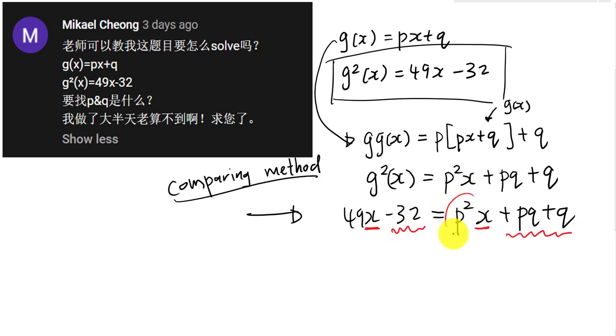So do you see the x here? And then on the other side of my equals sign, I have an x here. And then all this is without x, so this is without x, and all this will be without x. So therefore, from the comparing here, I know p² must equal to 49.